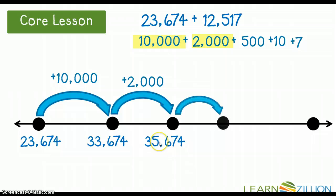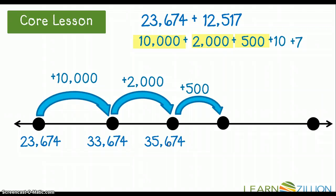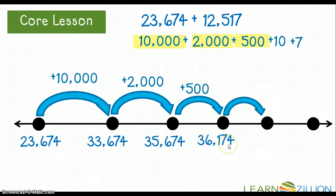The next number I'm going to add is 500. Now, I have a 6 in my 100s place and I'm adding a 5 in the 100s place, so I'm not going to get an even 100 — I'm going to jump into the 1,000s place. I know that 500 plus 600 is 1,100, so I add the 1,000 to my 5 to get 6, with 100 left over. So I'm left with 36,174.